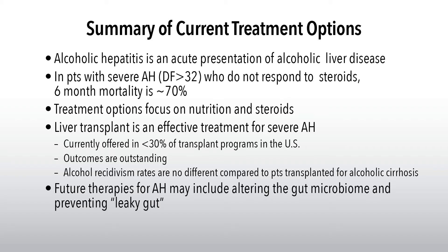Alcoholic hepatitis is an acute presentation of alcoholic liver disease — many patients had never known they had liver disease before and had not been informed that alcohol was the source of their injury. In patients with severe alcoholic hepatitis who do not respond to steroids, the six-month mortality is confirmed by many studies to be at least 70%. Liver transplantation is an effective therapy for a selected group of patients with severe alcoholic hepatitis, currently offered by less than 30% of programs in the United States, with outcomes comparable to non-severe alcoholic hepatitis patients at approximately 70–80%.